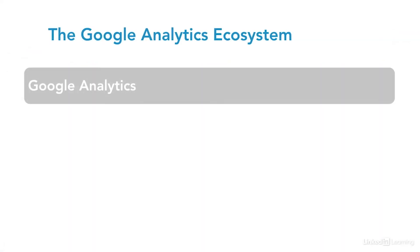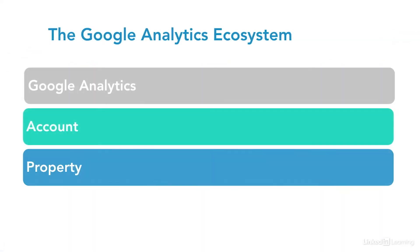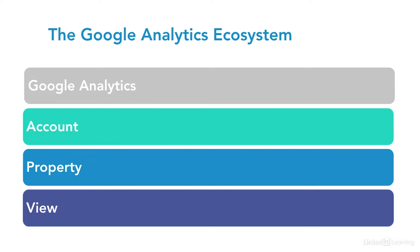The first thing to talk about is how the levels of Google Analytics are nested. At the top of the hierarchy is the Google Analytics account. This is your login, your password to all the Google services — Gmail, Hangouts, Analytics, AdWords, and so on.